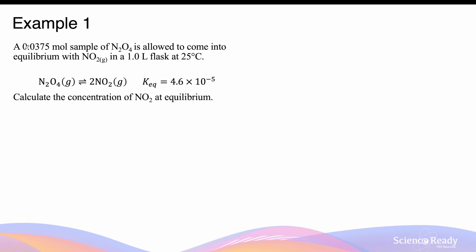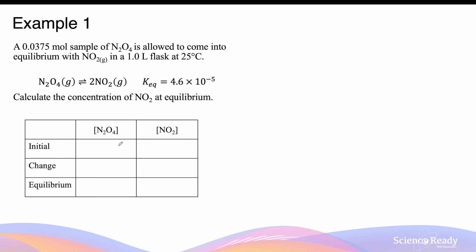A 0.0375 mole sample of dinitrogen tetroxide, N2O4, is allowed to come to equilibrium with nitrogen dioxide in a 1 litre flask at 25 degrees Celsius. Given the equilibrium constant at this temperature, we need to calculate the concentration of nitrogen dioxide at equilibrium. We'll start by constructing an ICE table: initial, change, and equilibrium concentrations.